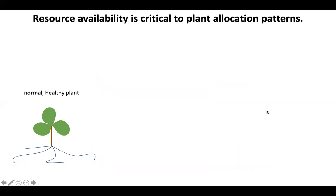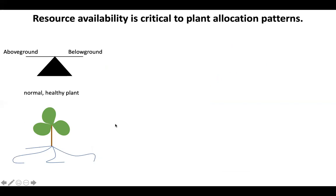The critical point here is how resource availability is going to govern these allocation patterns. Here I've drawn just a little plant with some green leaves, a brown stem, and some blue roots. This is a normal healthy plant. We can think about this plant as allocating in a standard normal way — what it would look like if there were no other stresses. You can think about above and below ground tissues as being balanced: enough tissue above ground to collect light and bring in carbon dioxide, and enough tissue below ground to take up sufficient water and nutrients from the soil.